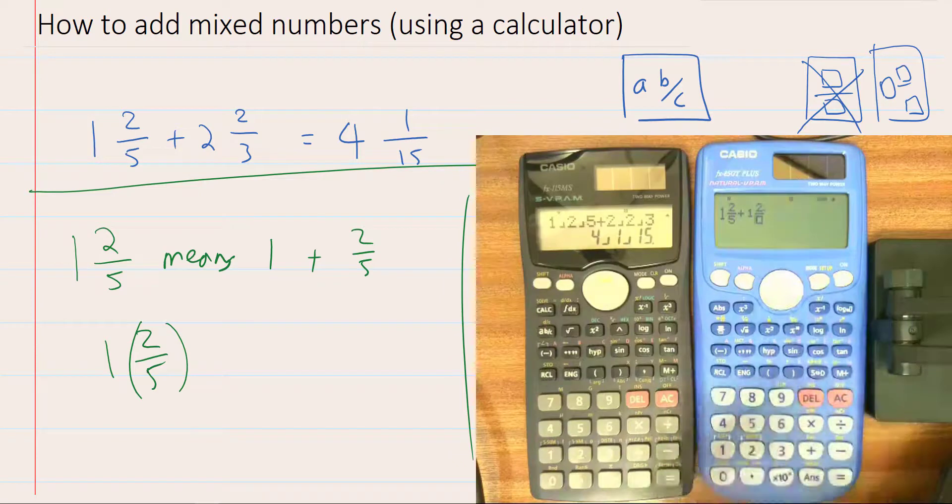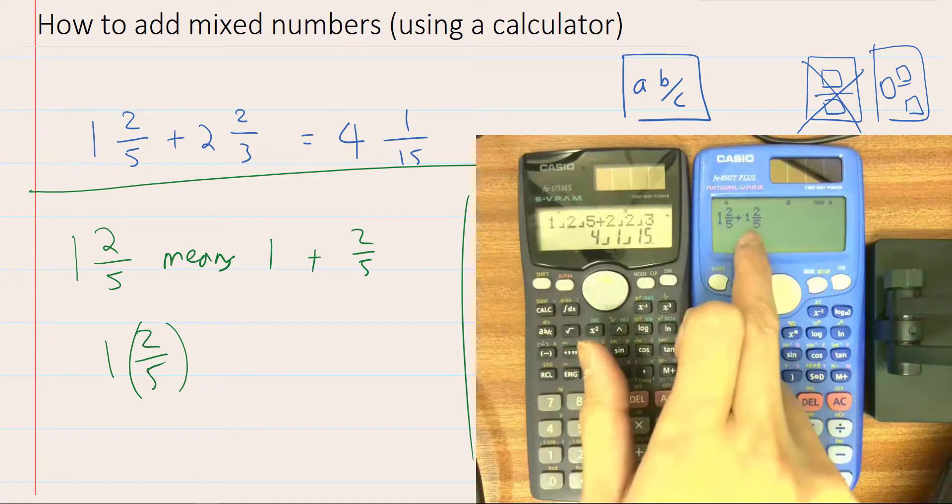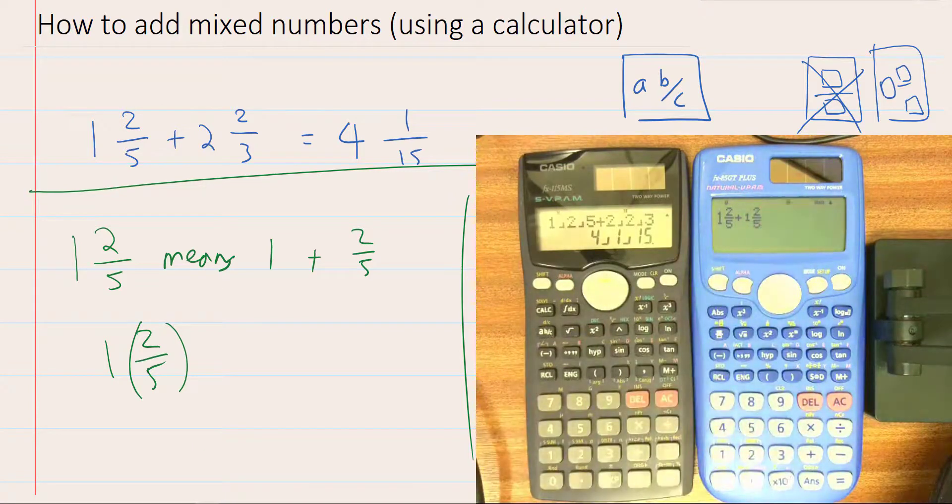But if you do 1 and 2 fifths the wrong way, the 1 is too big. And then the mixed number, the 1 is the same size as the other two digits. So that's how you could tell.